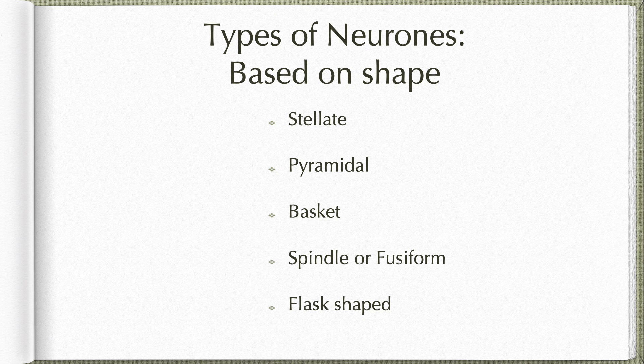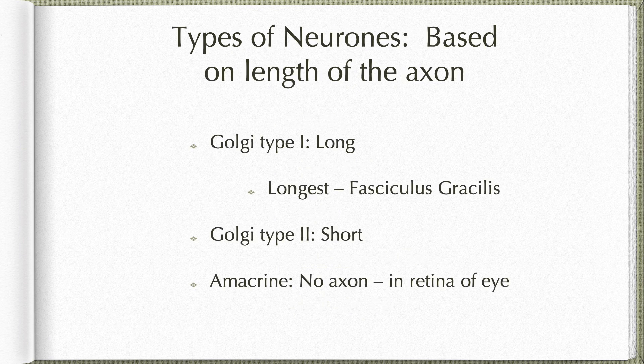Neurons can also be classified based on their shape as stellate, pyramidal, basket, spindle or fusiform, or flask-shaped. They can also be classified based on the length of the axon as Golgi type 1, having a long process, and Golgi type 2, having a short process, and amacrine cells which have no axon at all, as seen in the case of Cajal.